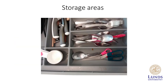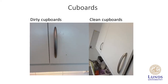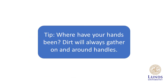Storage areas: as shown in this picture, there are stains inside the cutlery box. The easiest way to clean all the cupboards and storage areas is to empty out the contents and place them on the kitchen table while you clean the shelves and drawers. Cupboards: to the left, dirt around the handles; to the right, clean outsides. Tip: dirt will always gather on and around handles on cupboards, refrigerators, etc. — think about where your hands have been.